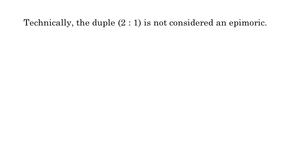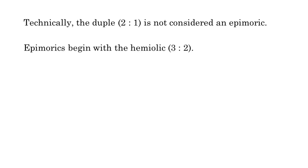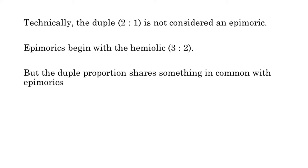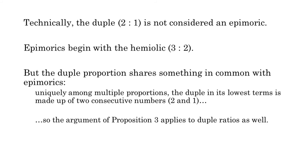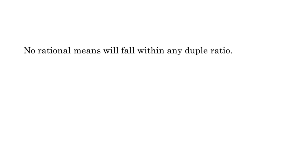One quick note: technically, the duple proportion is not considered an epimoric. By definition, the epimorics begin with the hemiolic proportion. But the duple proportion does share some characteristics of epimorics. Because, uniquely among multiples, the duple proportion in its lowest terms consists of two consecutive whole numbers — two and one — the argument in Proposition 3 also applies to the duple proportion. No rational means will fall within any duple ratio.